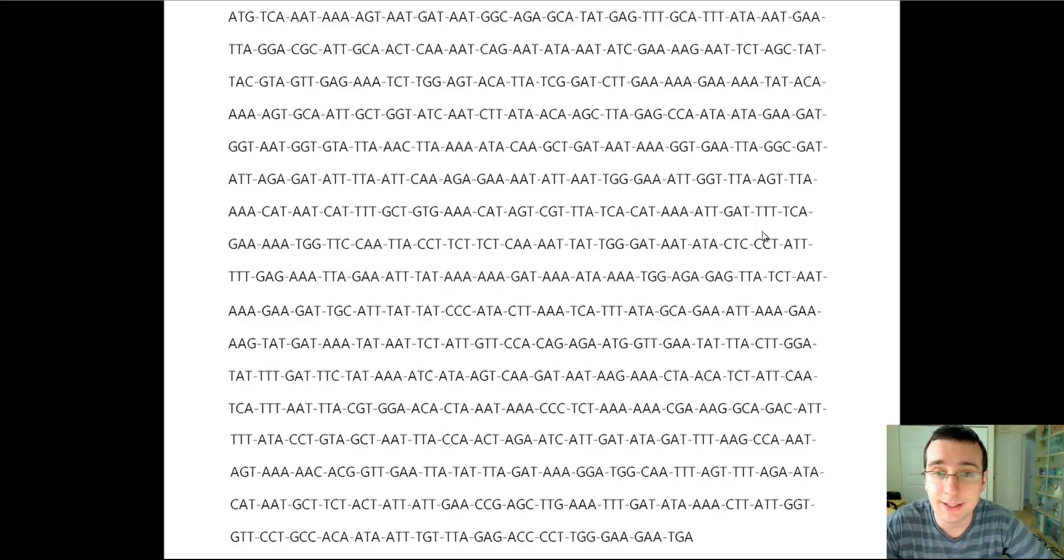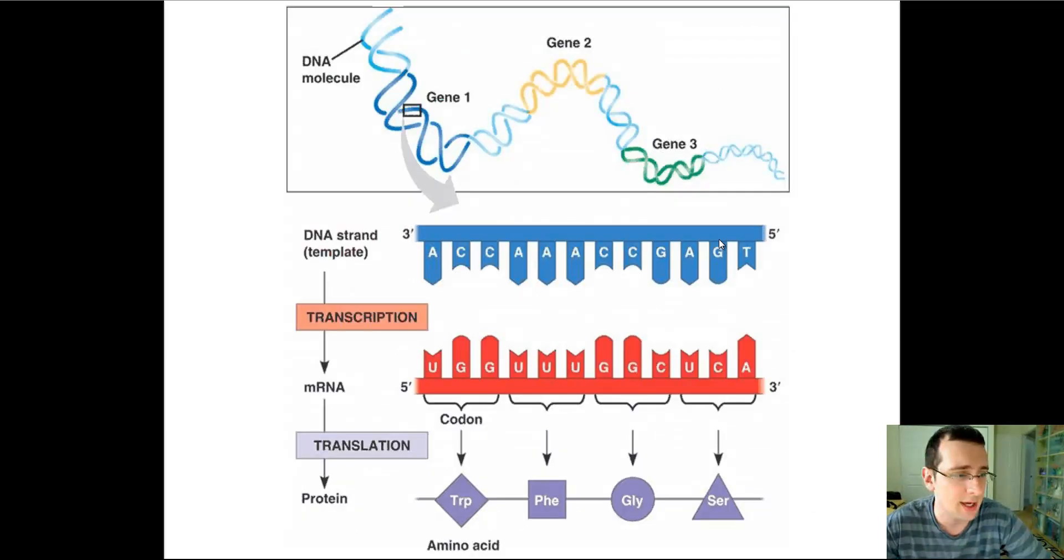This whole process is determined by the code inside DNA, which is a DNA triplet code. You can see here an example of that. A sequence of nucleotides, three at a time, will help determine the sequence of amino acids that show up in the protein.